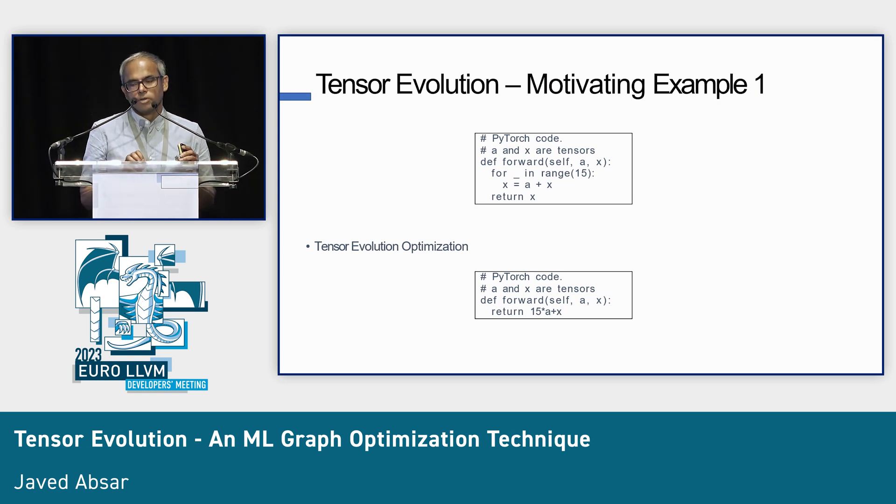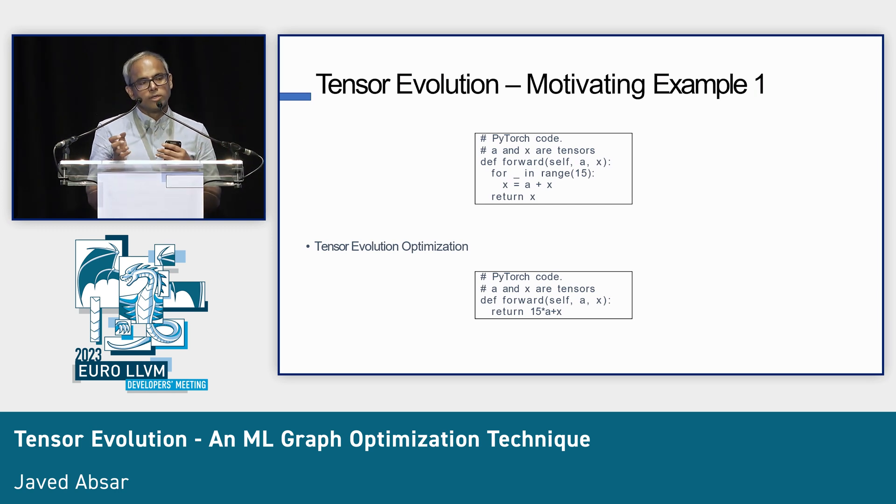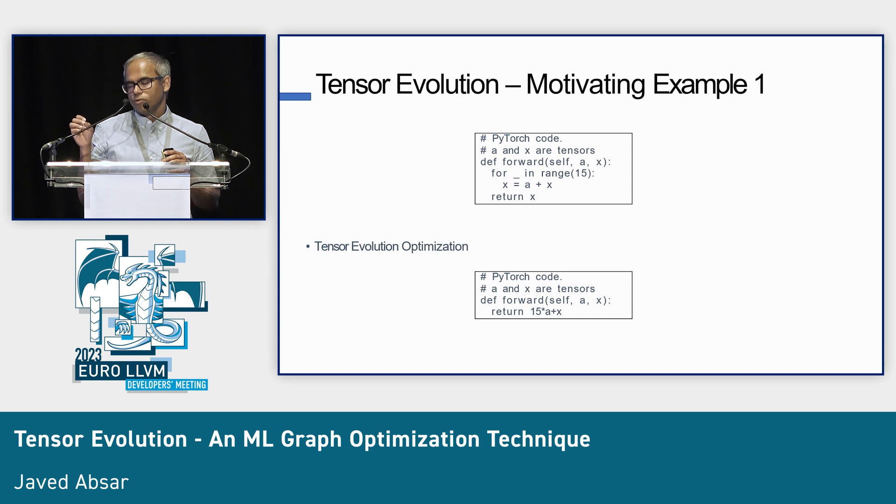Before we get into the mathematics, this scalar evolution, we know it does something for you. What does tensor evolution give you? Here is a very simple PyTorch code, where you have this forward block, and in there you have a for loop, and in the for loop, you have X equals A plus X. A and X are tensors. A is a loop invariant tensor, and X is getting overwritten. If you stare at the code for a few seconds, you can figure out you're returning the final value of X, and you run this loop 15 times. So basically, you're going to return 15 times A plus X, where X is the original value that came in.